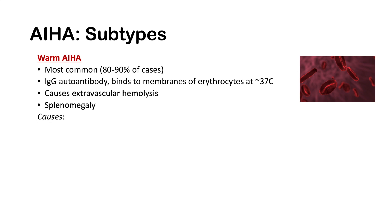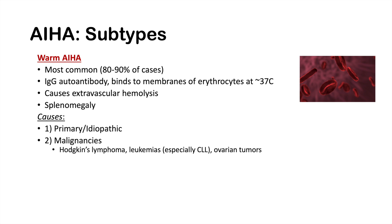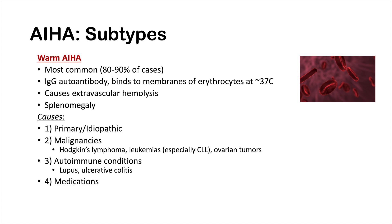There are several causes of warm autoimmune hemolytic anemia. The first is primary or idiopathic — no obvious secondary cause. Secondary causes include malignancies such as Hodgkin's lymphoma, CLL, and ovarian tumors; other autoimmune conditions like lupus and ulcerative colitis; medications, particularly alpha-methyldopa; and viral infections, which are a more common cause in children.